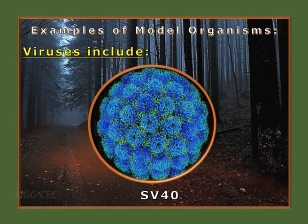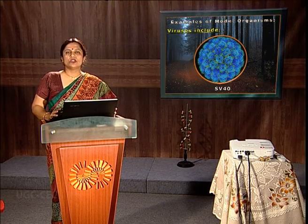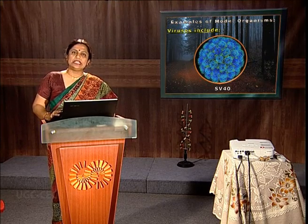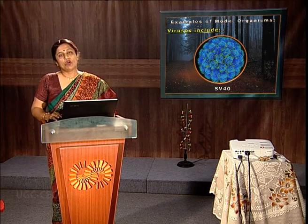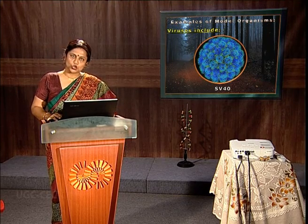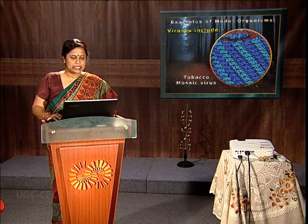Next comes SV40, or Simian Virus 40. It is a eukaryotic virus that causes tumors and is the most important model for studying eukaryotes. SV40 has the additional importance that it can carry on transformation of cells as it causes tumors.